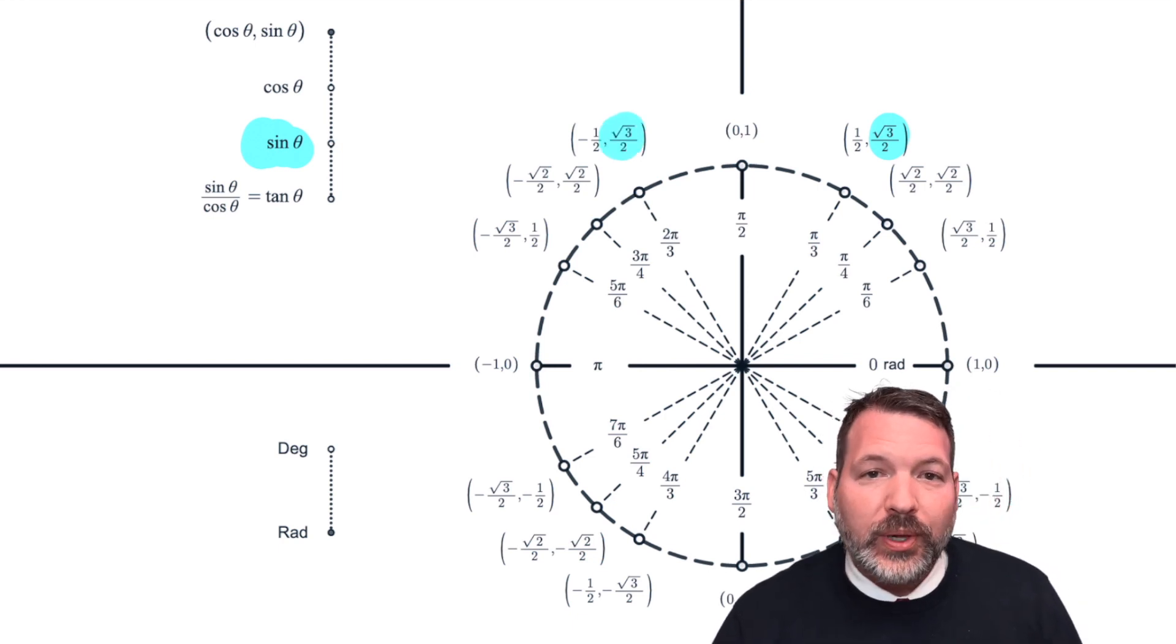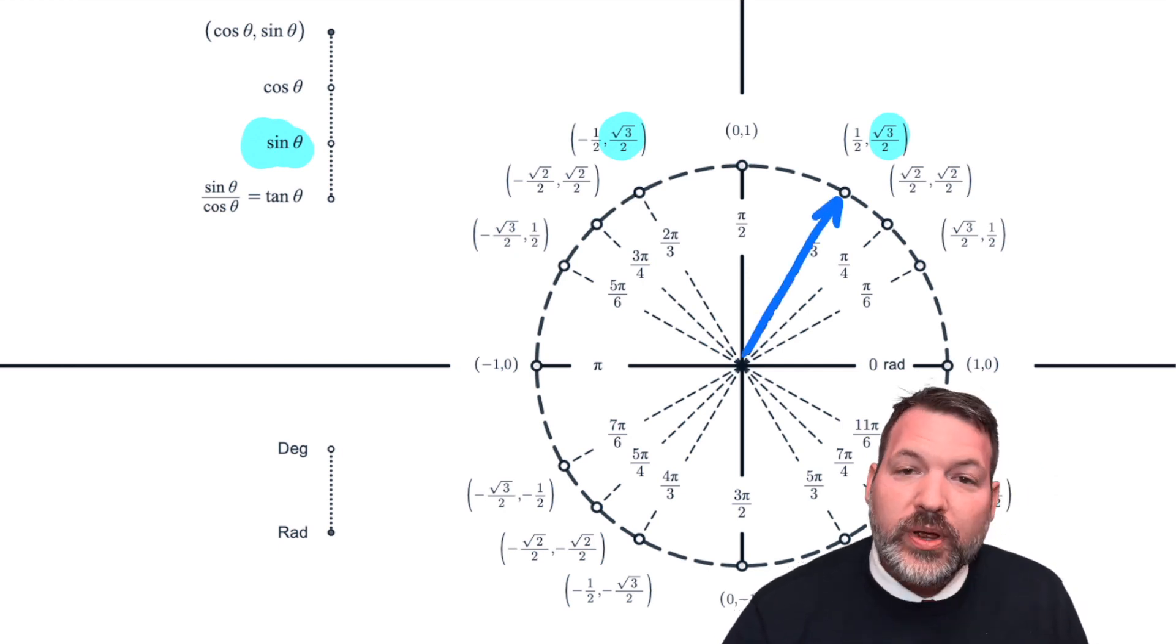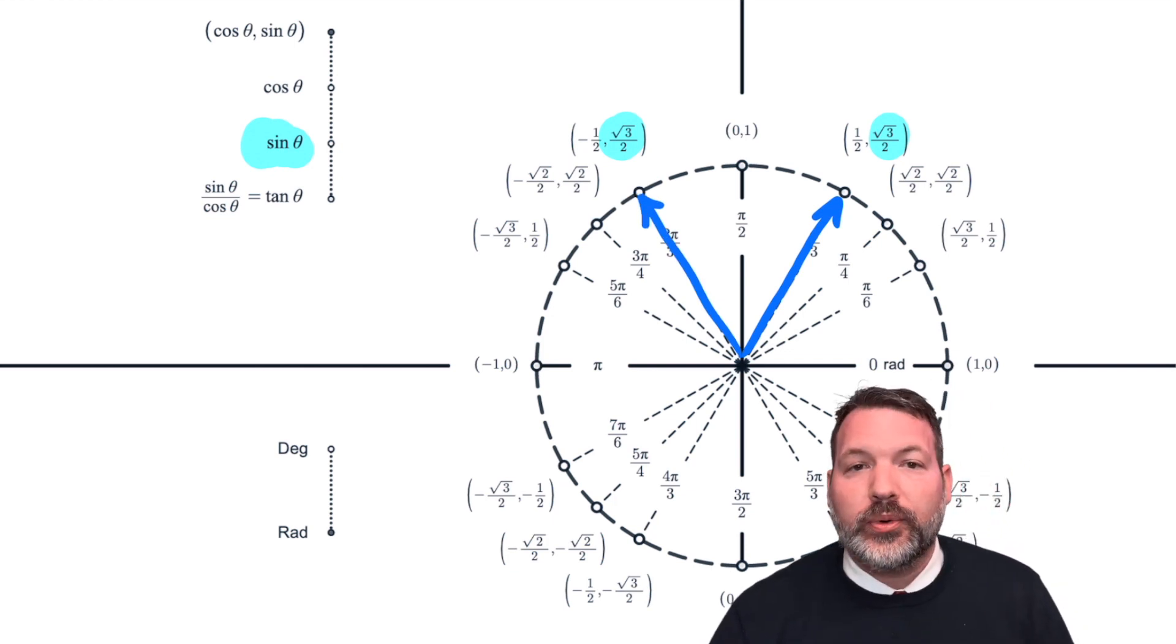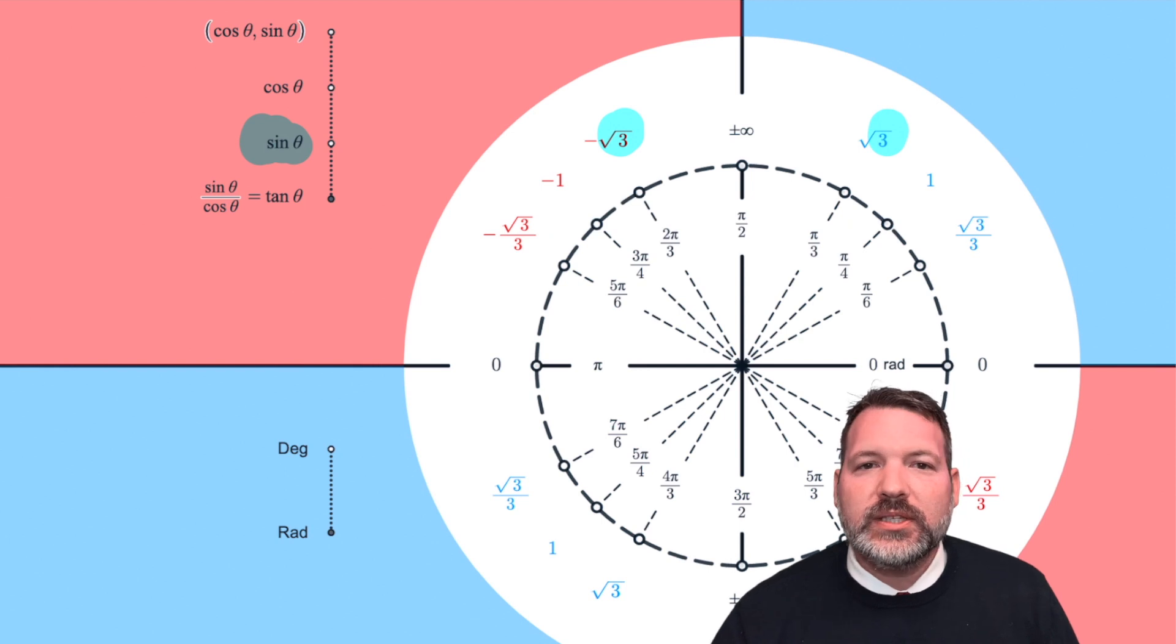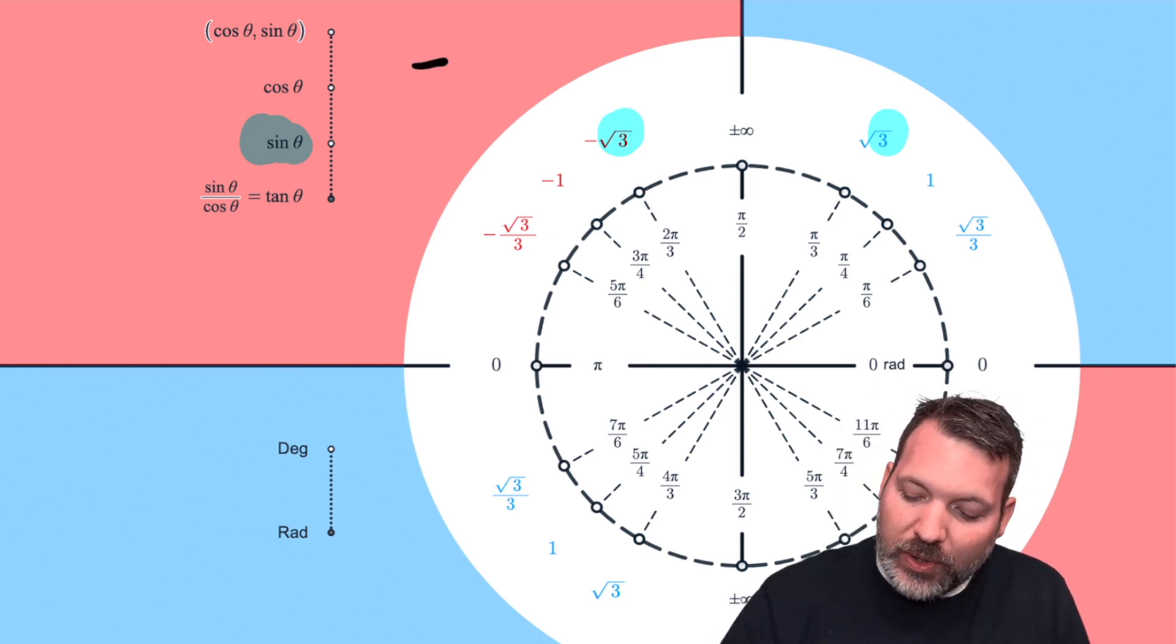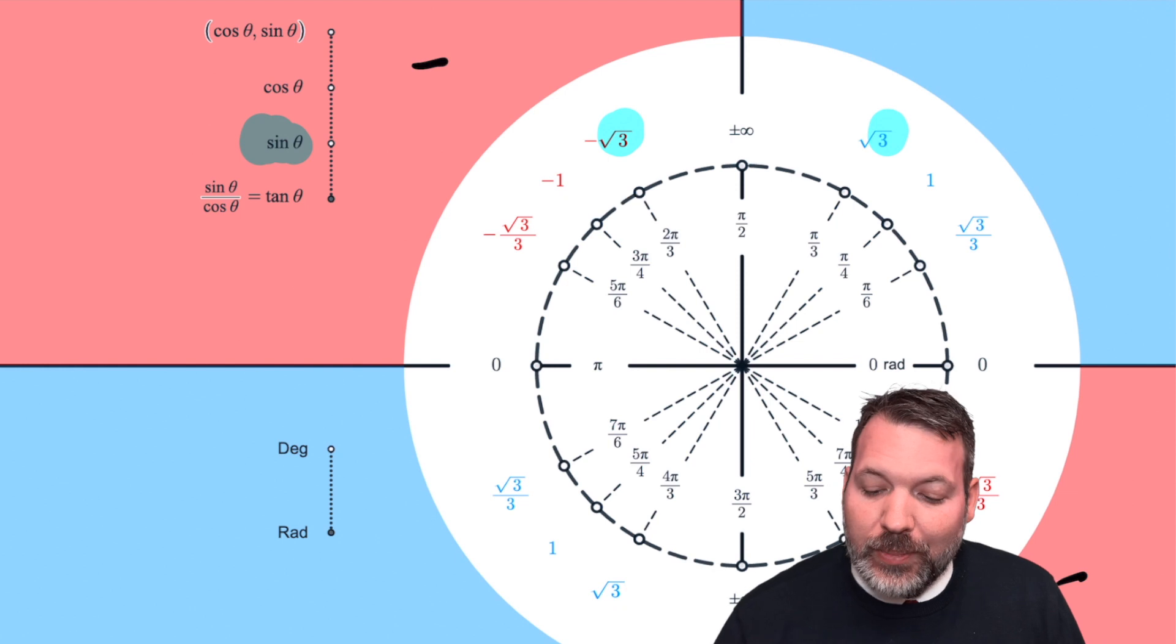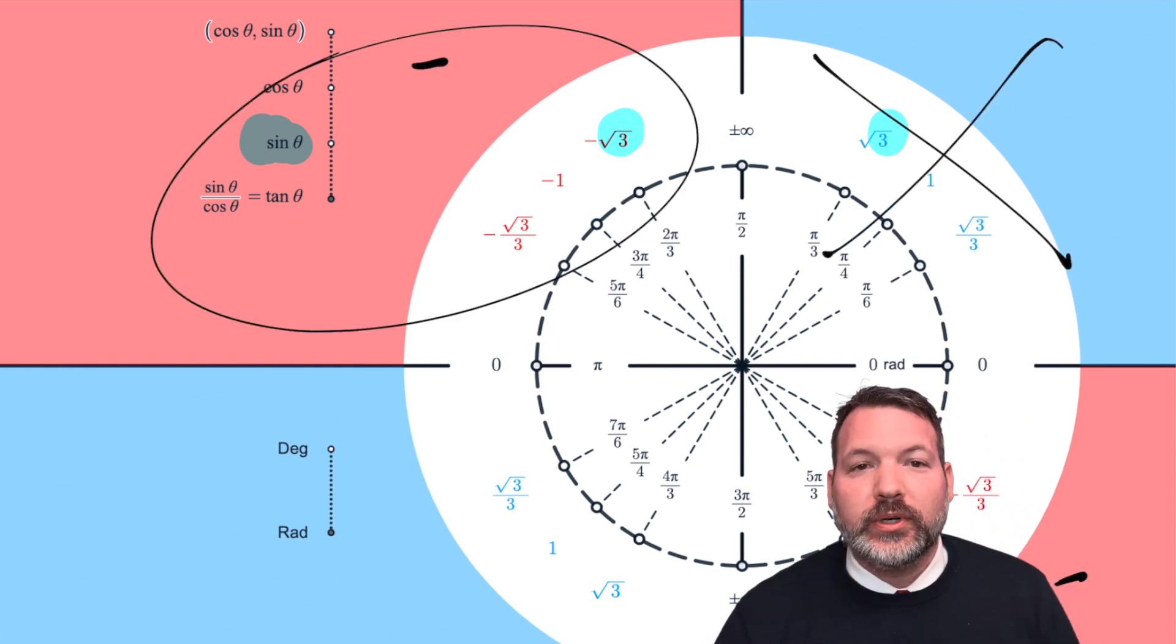There are actually only two places that can possibly happen. Either we're looking at pi over 3 radians, that would be equivalent to 60 degrees, or we're looking at 2 pi over 3 radians, that's equivalent to 120 degrees. But the other clue we were given is that tangent is supposed to be negative. Remember, tangent is only going to be negative where sine and cosine have opposite signs. That's quadrant 2, and it's quadrant 4. That means that we cannot be in quadrant 1, so we must be looking at quadrant 2.